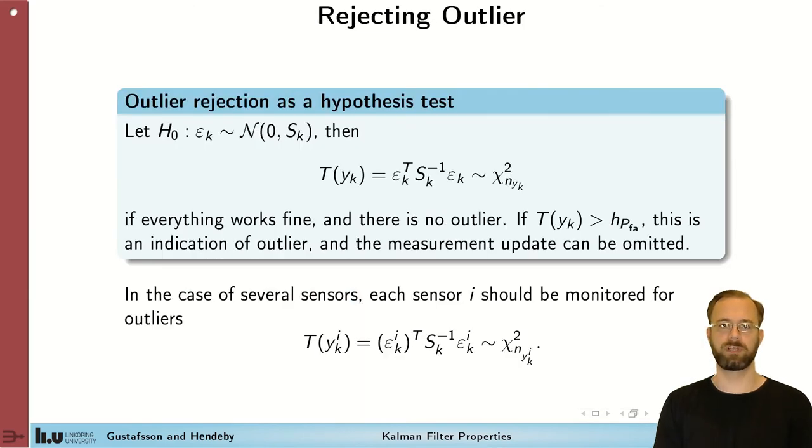All sensors sometimes deliver outliers. That is, measurements that do not reflect the true state of the system. Outliers can be detected and rejected using a hypothesis test. The idea here is to test if the innovations have the statistical properties that they are expected to have. If everything works as expected, there is no outlier, we can use the measurements.